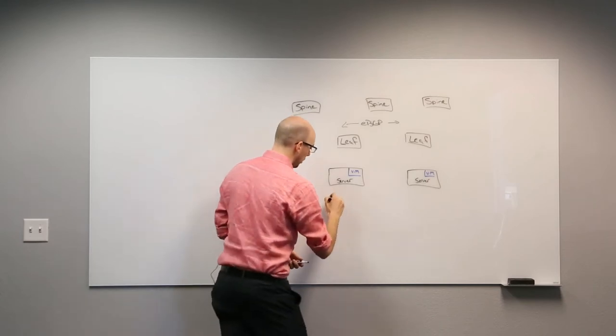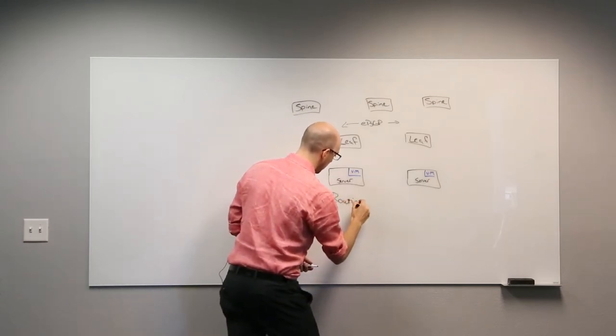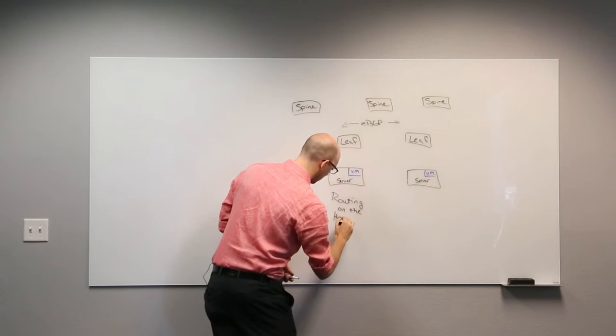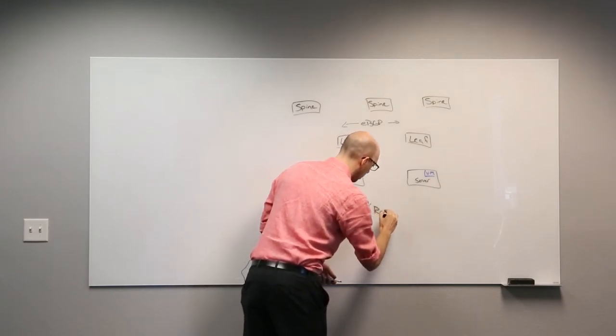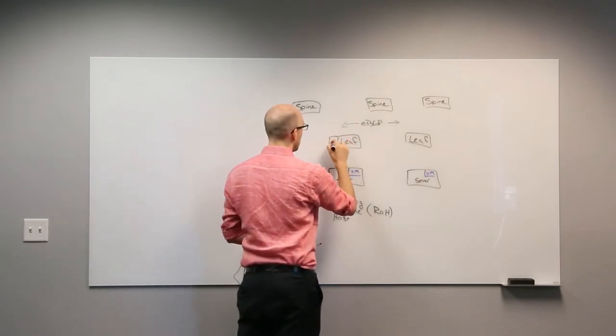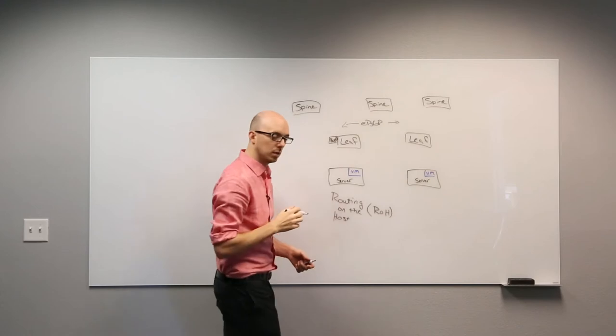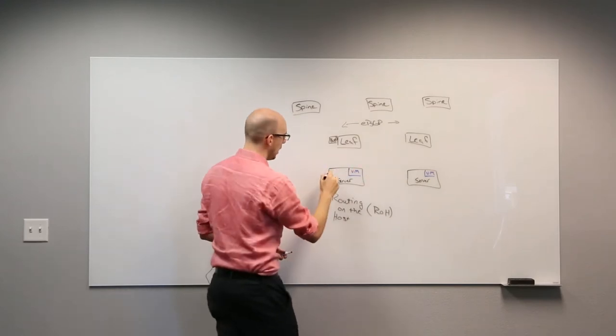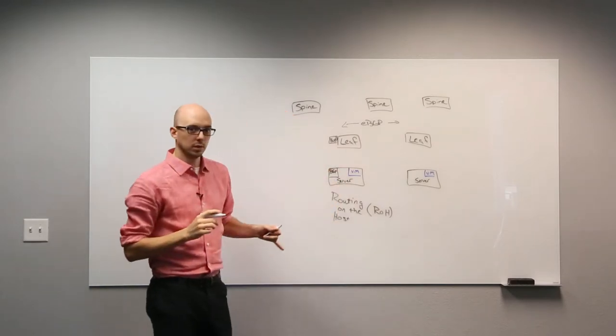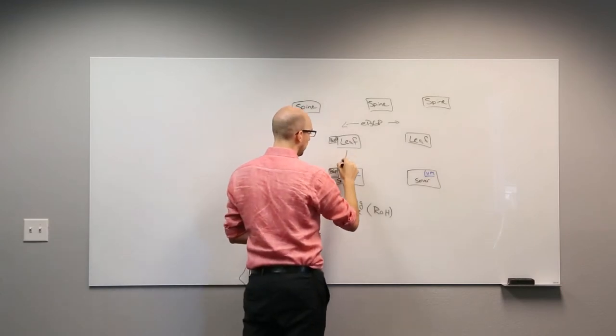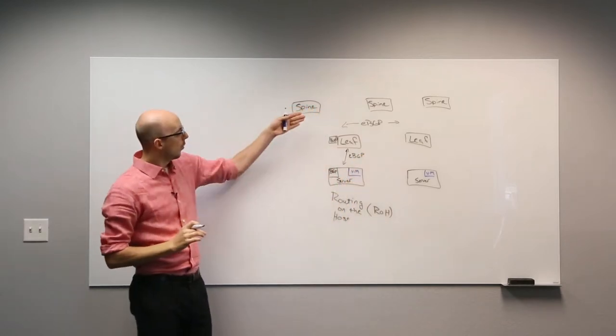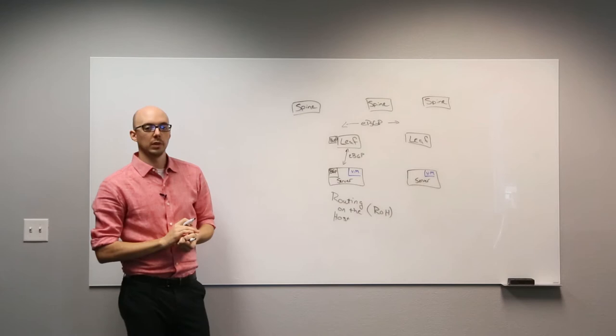With routing on the host, or RoH, what I will do is take the Cumulus BGP application, called FRR, that runs on each switch in my environment, and run that as an application on my top-of-rack server. This allows my server to extend that eBGP fabric down from not only the spine and leaf, but all the way down to the server level.